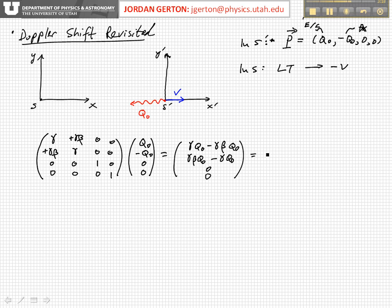And this has to basically equal to Q, or let's just call it E over C, and PX, PY, PZ. That's the transformed four vector.